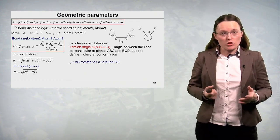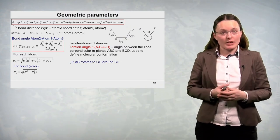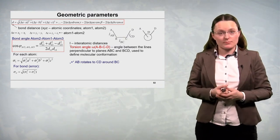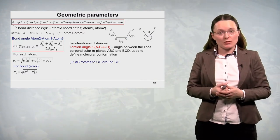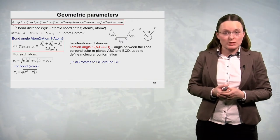The torsion angle also has sign either plus or minus. There is a plus sign if A, B rotates to C, D around B, C.